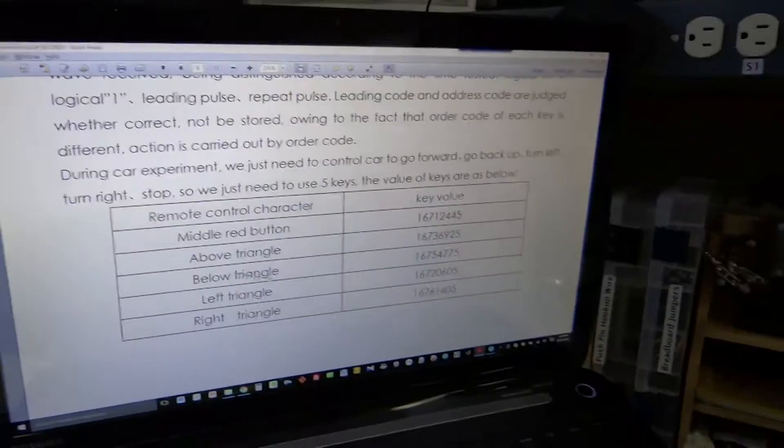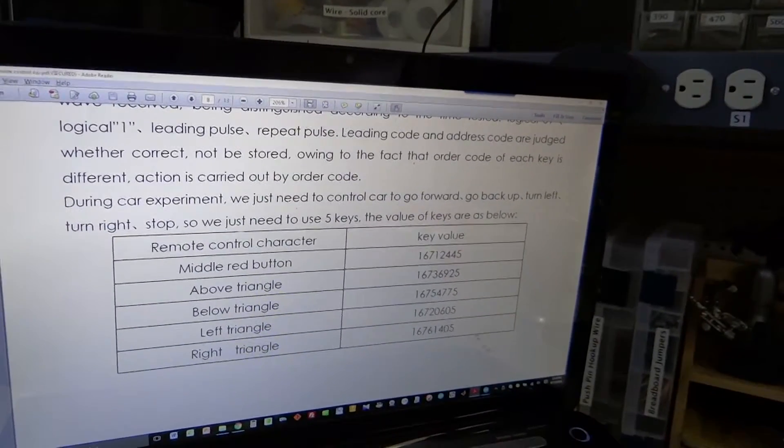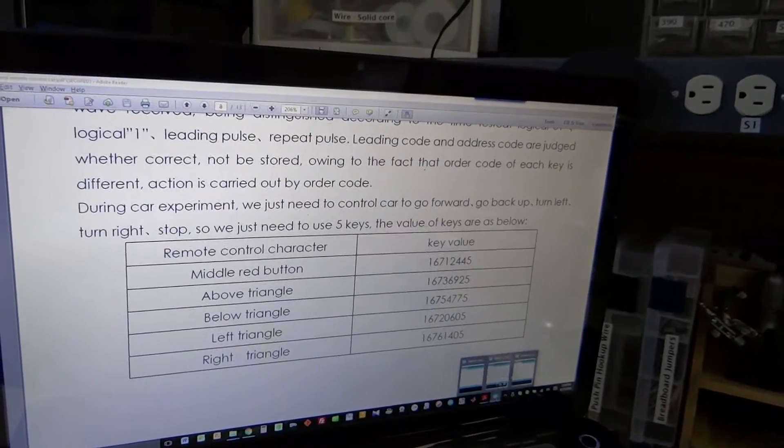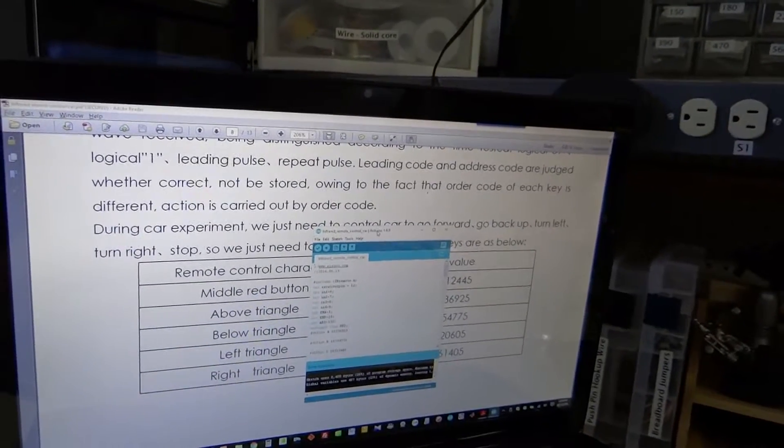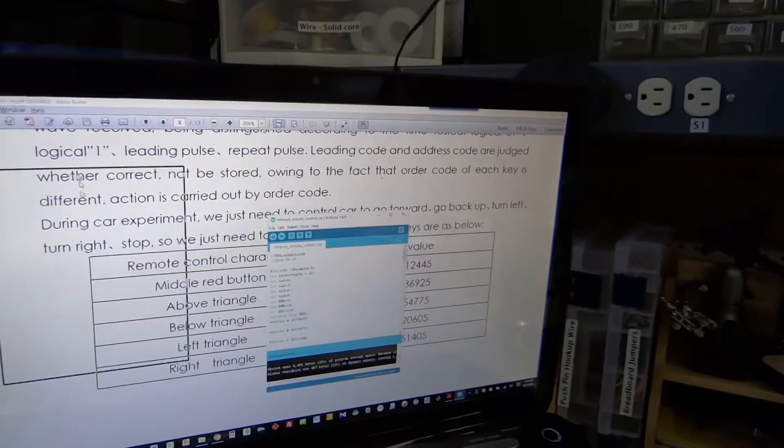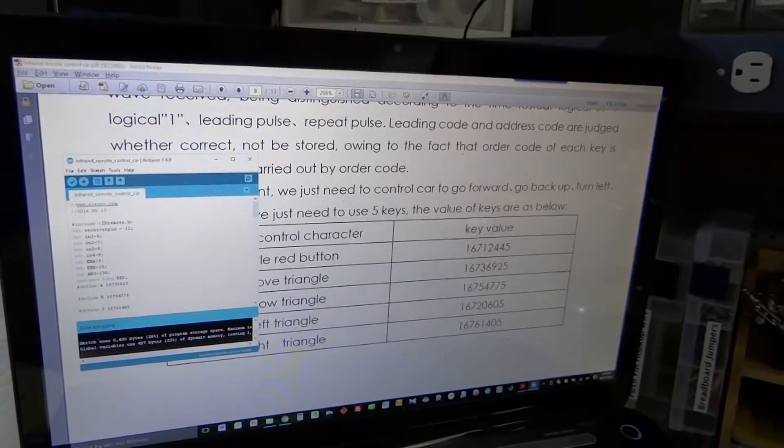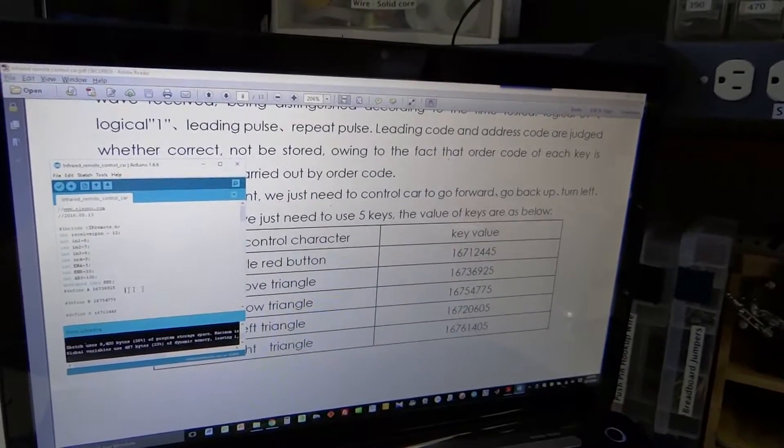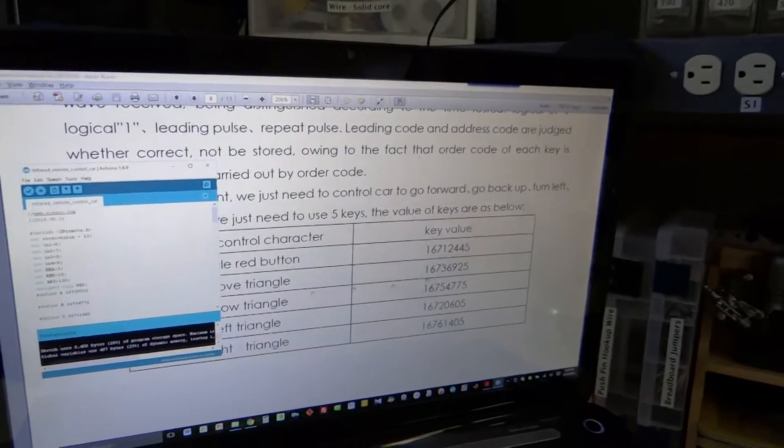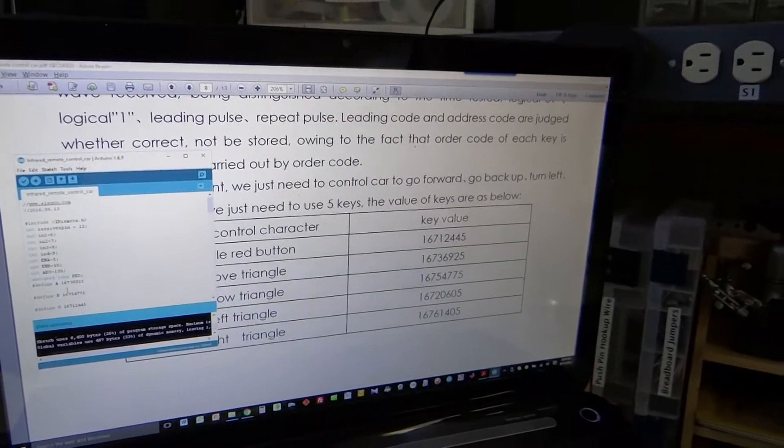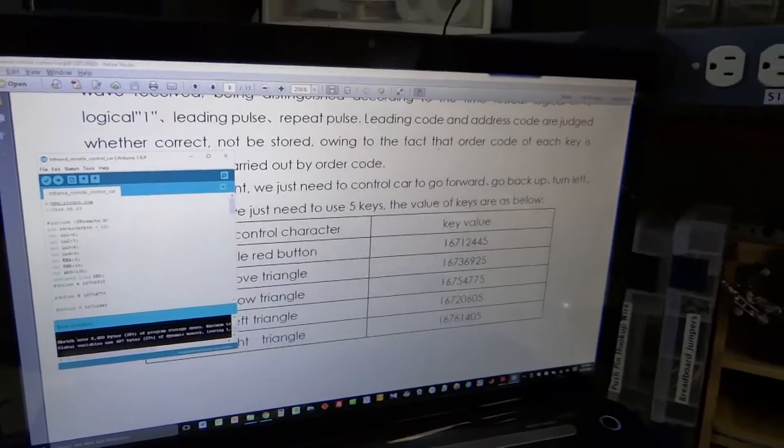The above triangle is 16736925. This is the infrared remote control car, and if we look at this 16736925, this is defined as A.